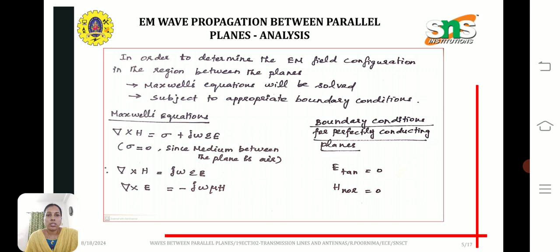Next, del cross h becomes j omega epsilon e, and del cross e equal to minus j omega mu h. This is one of Maxwell's equations. The boundary conditions for perfectly conducting planes are e tangential equal to 0, h normal equal to 0.